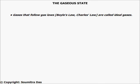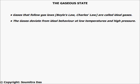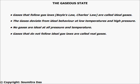The gases that follow the gas laws are called ideal gases. Gases deviate from this ideal behavior at low temperatures and high pressures. No gases are ideal at all pressures and temperatures. When gases do not follow the ideal gas laws like Boyle's law and Charles' law, they are called real gases.